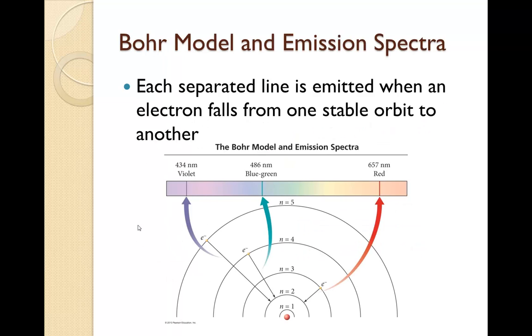Let's now relate this to the Bohr model. Each separated line is emitted when the electron falls from one stable orbit to another. So the Bohr model has the nucleus in the middle and then as you go further and further out, you see different energy levels. This N is referring to the energy level. And the further away you get, the higher energy level it is.